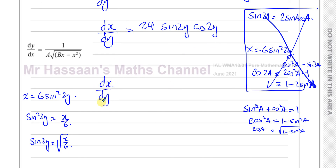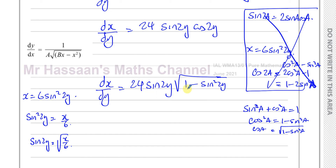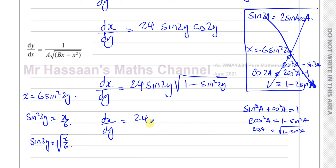So dx/dy equals 24 times sine of 2y times the square root of 1 minus sine squared 2y. Now substituting: sine of 2y equals the square root of x over 6, and sine squared 2y equals x over 6. So dx/dy equals 24 times the square root of x over 6, multiplied by the square root of 1 minus x over 6.